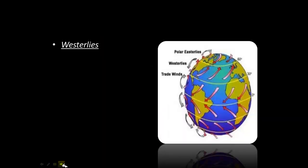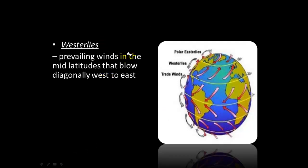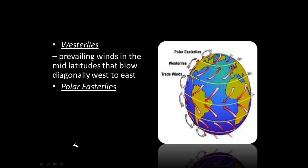The westerlies are the prevailing winds in the mid latitudes. They blow diagonally from east to west. The mid latitudes are the region right above the low latitudes, and the climate there is generally cooler. The polar easterlies are the prevailing winds in the high latitudes, and they also blow diagonally from east to west.